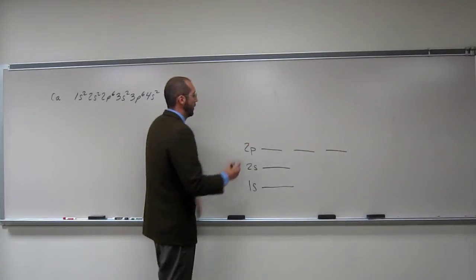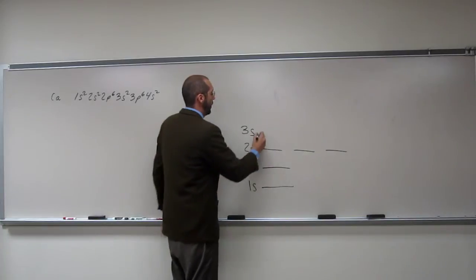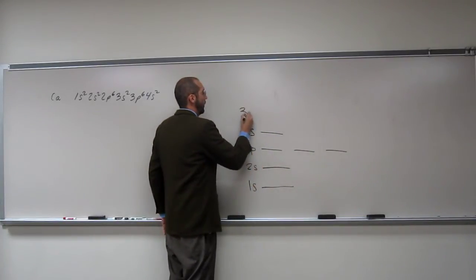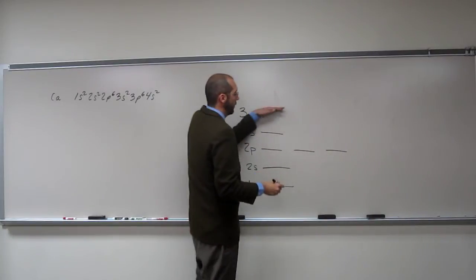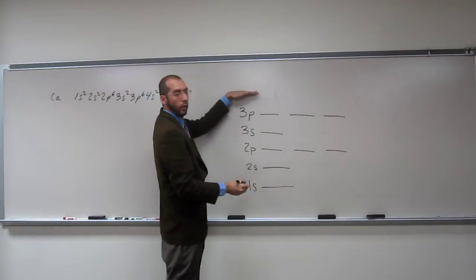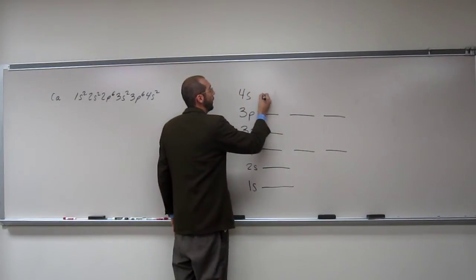The next one up? 3s. 3s. How many orbitals? 1. 1. Next one up? 3p. 3p. How many orbitals? 3. Very good. The next one up? 4s. 4s. How many orbitals? 1. 1.